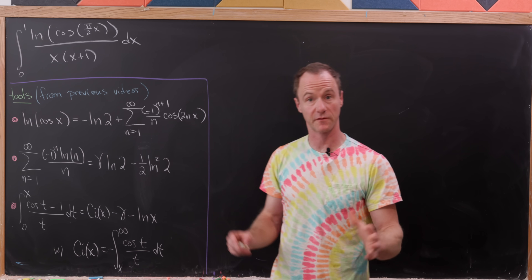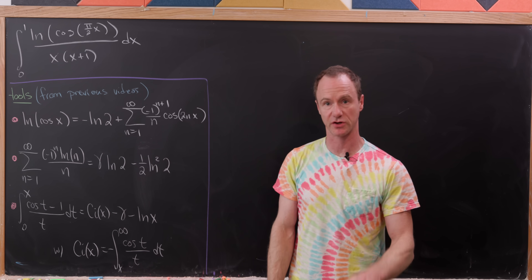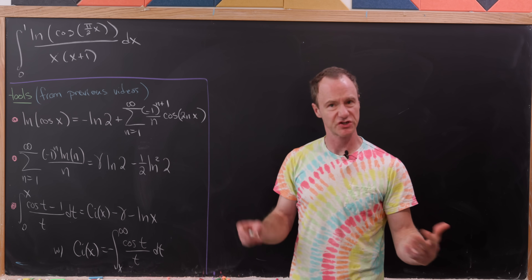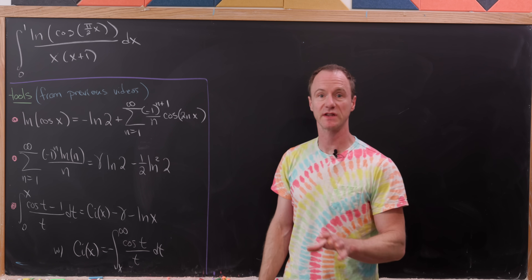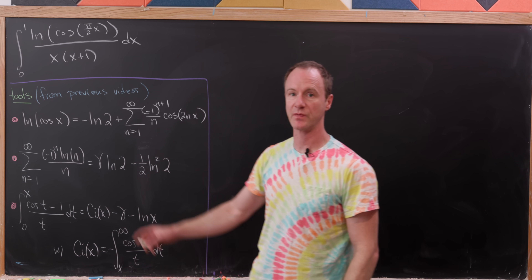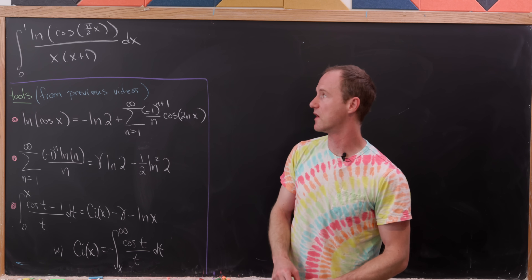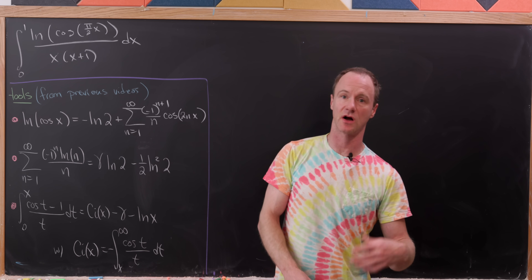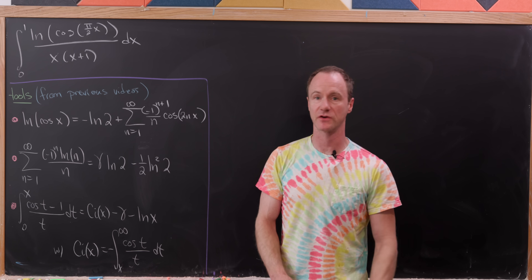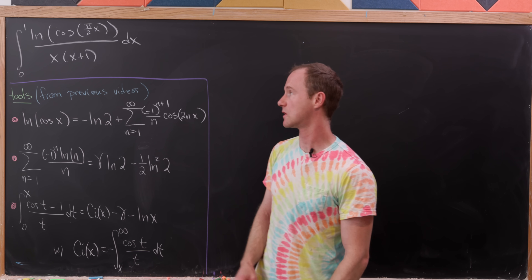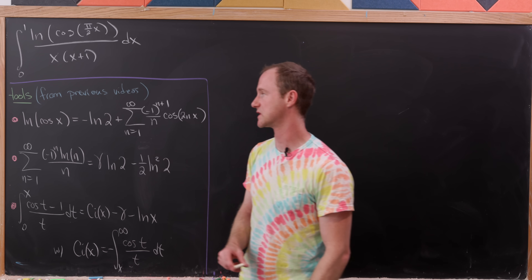Today we've got a pretty nice integral from our favorite integral suggester, who suggests lots of nice integrals for the channel. We're going to evaluate the integral from 0 to 1 of the natural log of cosine of π/2 times x, all over x times x plus 1.